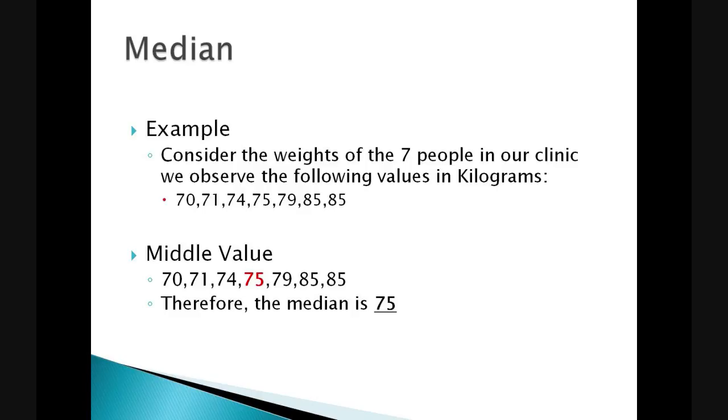If we now consider the same example as before, where we want to measure the median value of the weight of the patients in our clinic, we find that the middle value is 75 kilograms, with three values on either side. If the situation arises that you have an even number of values, you would take the two middle values, add them together, and divide them by two. And that will give you the median value.